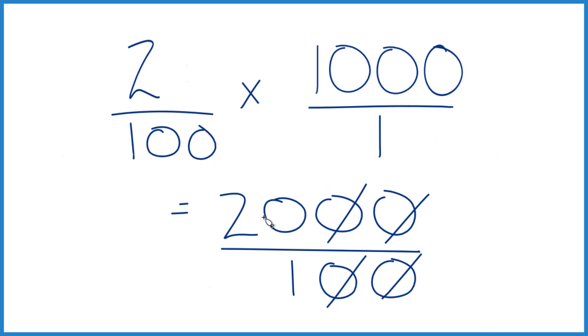2% of 1,000 is 20, just like we found before. The other way you could do it, divide 2 by 100, that gives you 0.02, and then just multiply that by 1,000, you'll get 20.